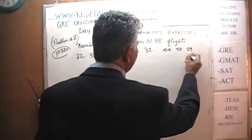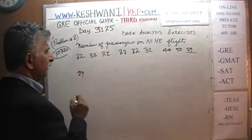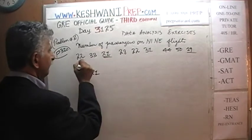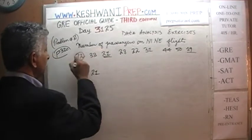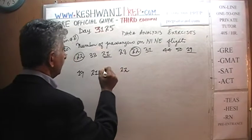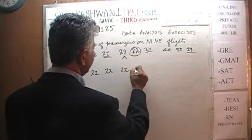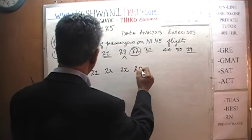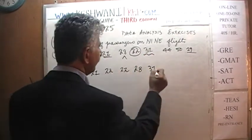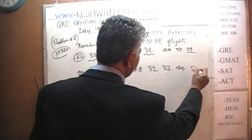The lowest one I see here is 19 — let's put it first. Then we see a 21, then a 22 and a 22 — two 22s. Then 28, then 31, then 33, and then 44 and 50.